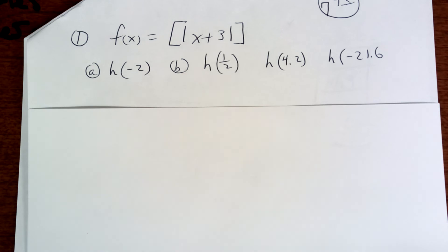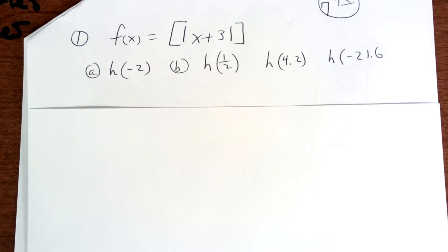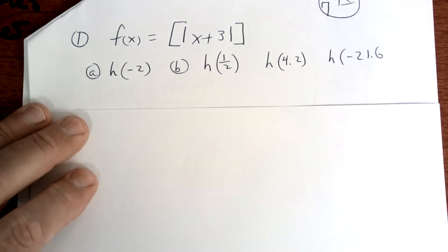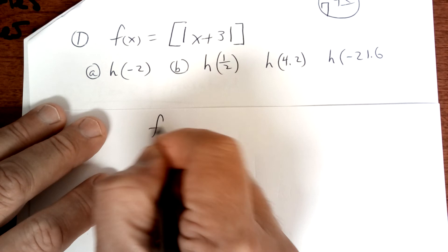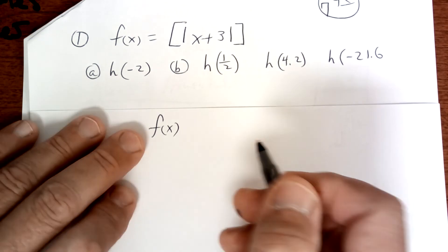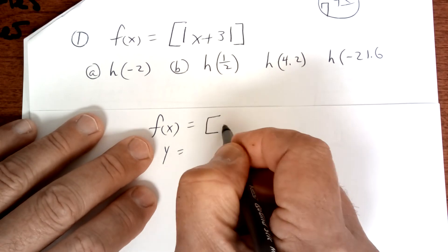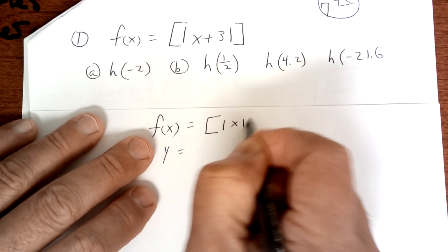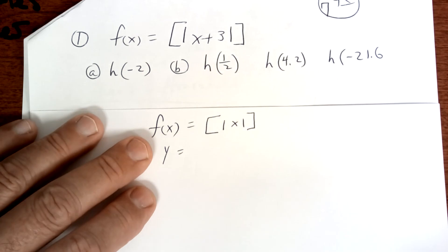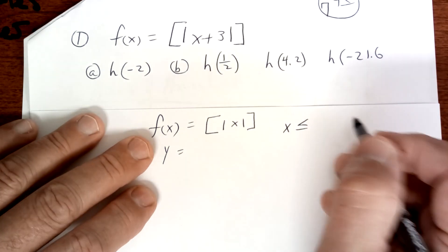All right, let's turn our attention now to 7th period. This is a step function right here. Let's go over the definition of the step function. So f(x), which is really like y, so f(x) equals the step function of this. We're just going to say x for now. So the definition is it's going to be x is less than or equal to the greatest integer.